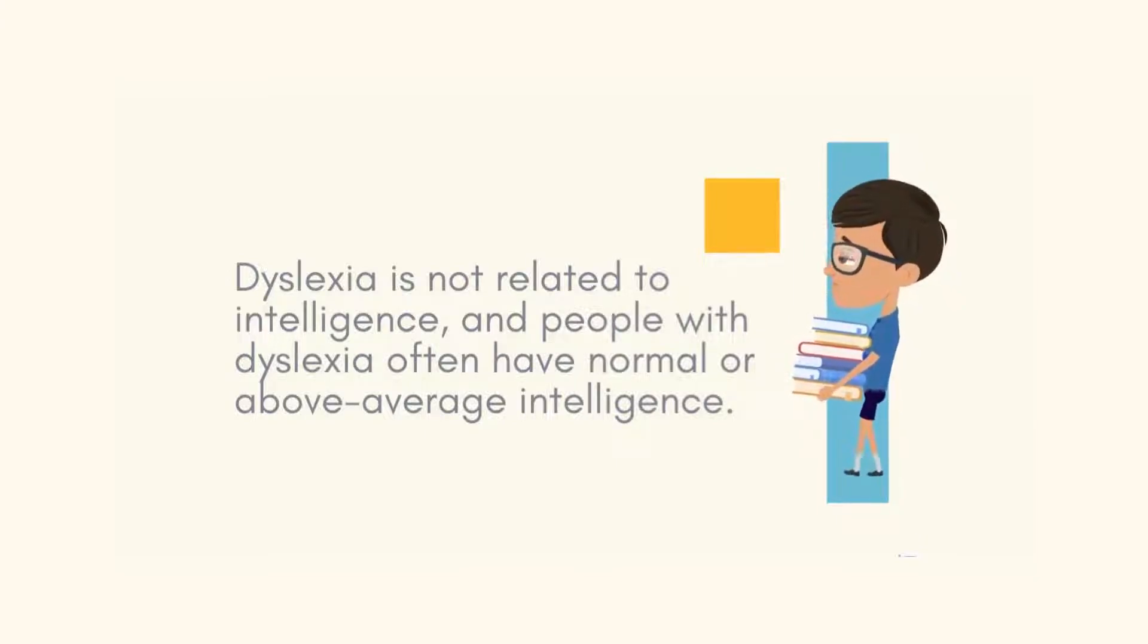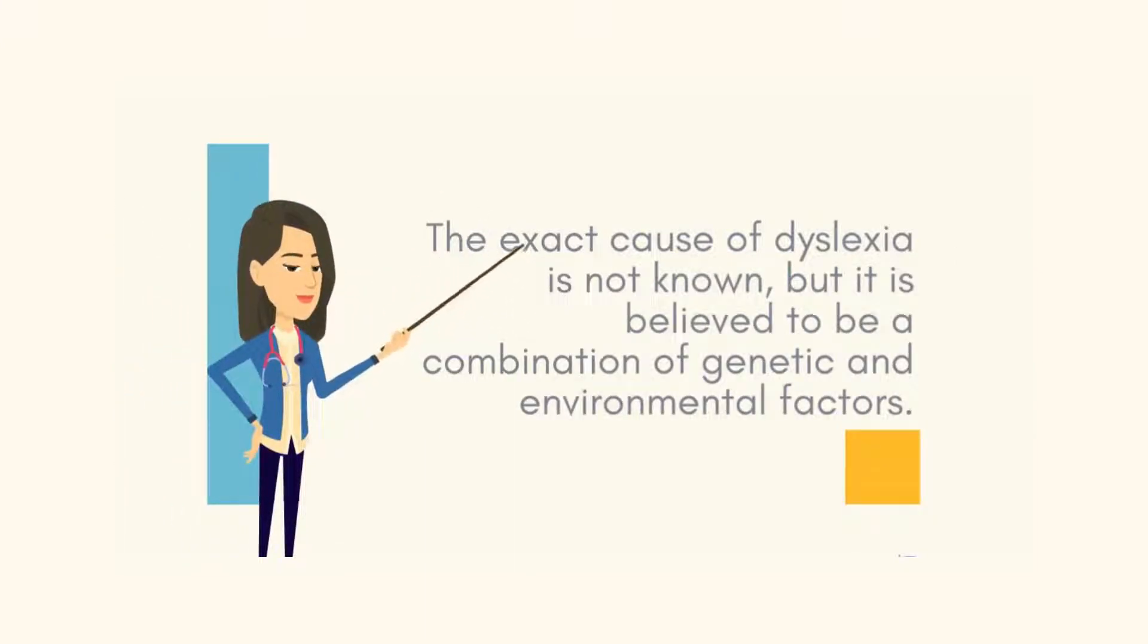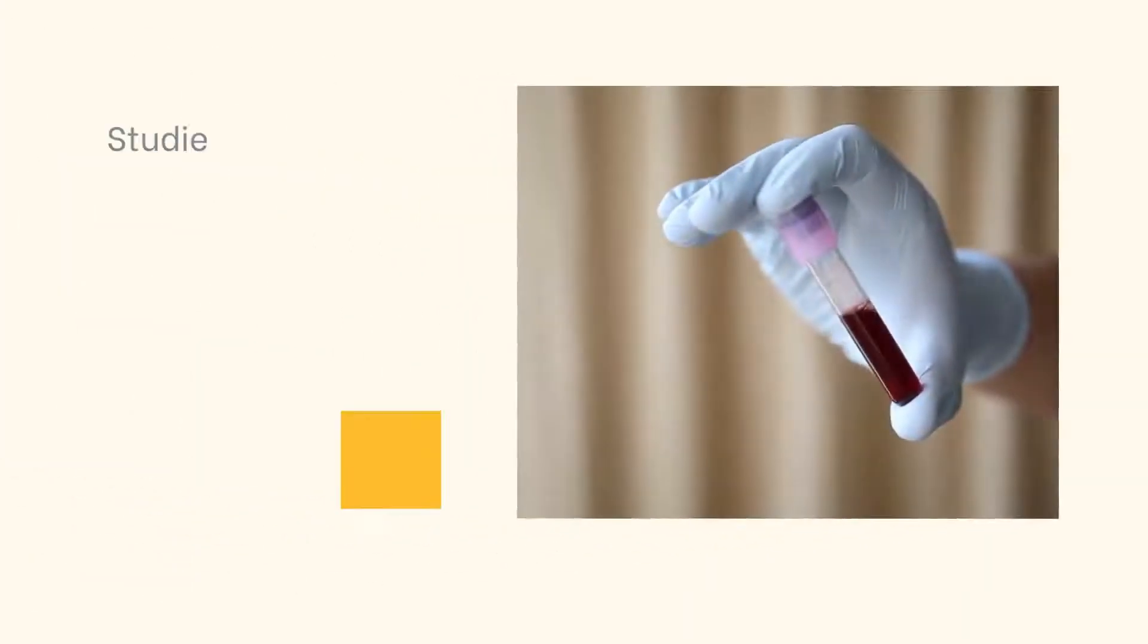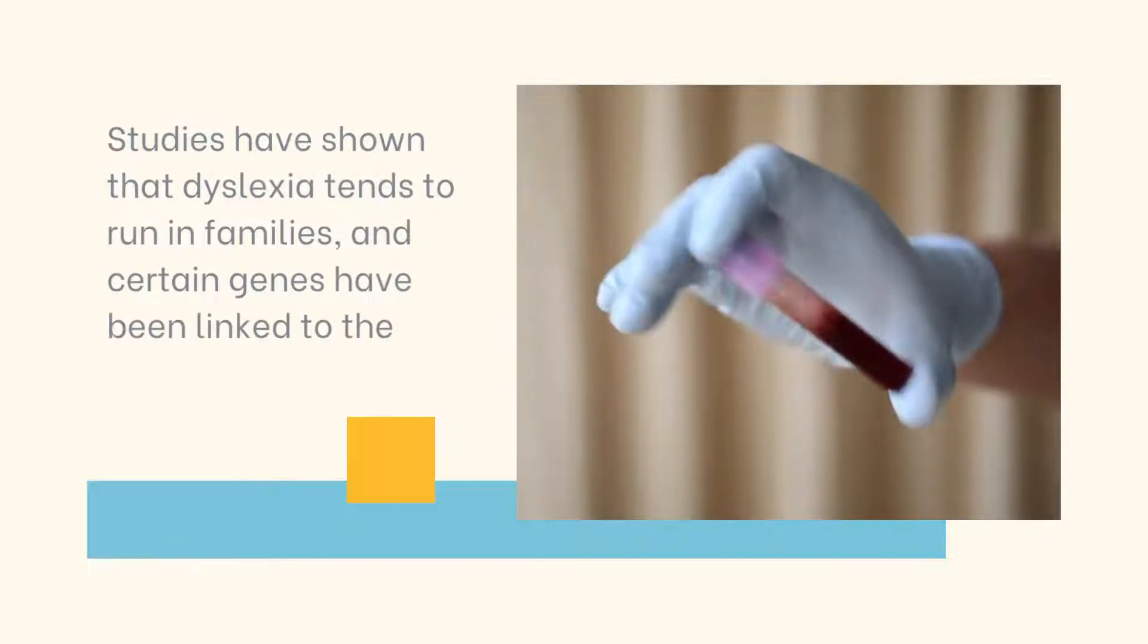The exact cause of dyslexia is not known, but it is believed to be a combination of genetic and environmental factors. Studies have shown that dyslexia tends to run in families, and certain genes have been linked to the condition.